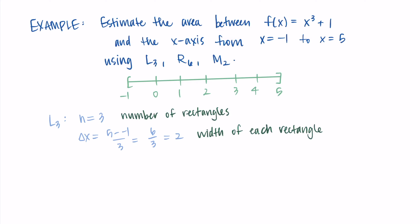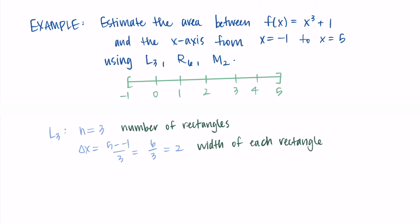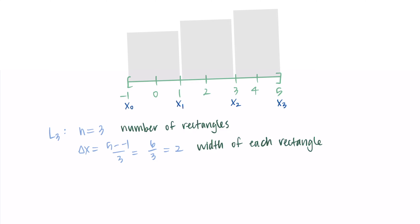I'm going to call x₀ my first value at -1, then count up: x₁ goes at 1 (moving over by 2), then x₂ (moving over two more), then x₃ (two more after that). These are just the endpoints of each of my rectangles, which helps me see what it might look like on the graph.